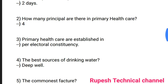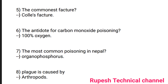Question number five: the commonest factor — coalescence factor. Question number six: the antidote for carbon monoxide poisoning — 100 percent oxygen. Question number seven: the most common poisoning in Nepal — organophosphorus. Question number eight: plague is caused by arthropods.